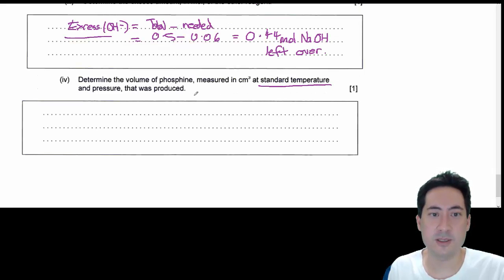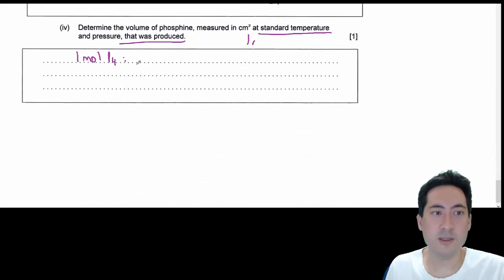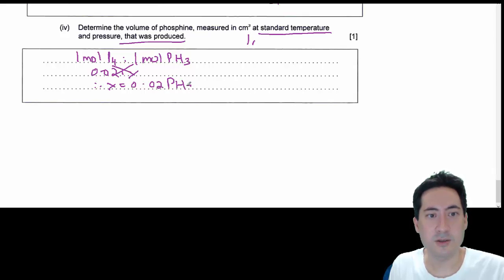The last one, this one's quite unusual, STP. They usually do PV equals NRT. So that's just going to be 1 mole to 22.7, which is in your data booklet. To determine the volume of phosphine, I don't know how many moles of phosphine I've used yet. So 1 mole of P4 is to 1 mole of phosphine. I could do a cross multiplication. It's 0.02 is to X. Therefore, X equals 0.02 moles PH3.